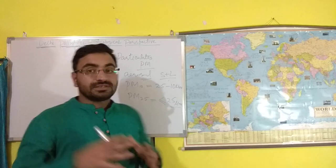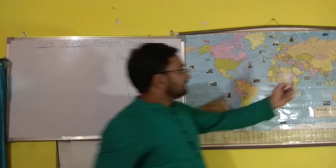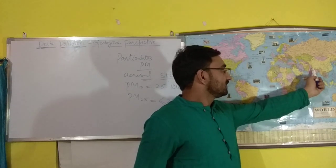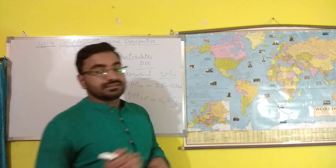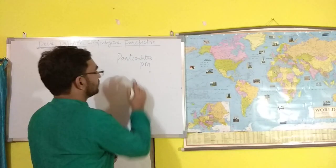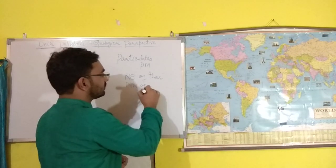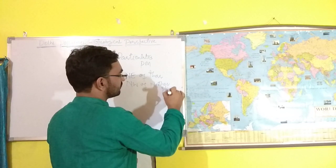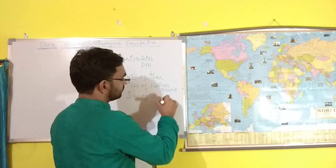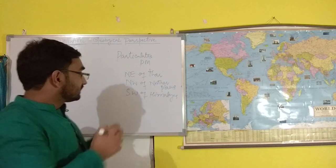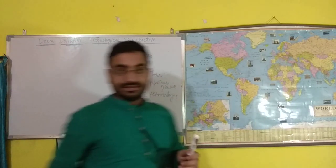Now I will discuss this from a geographical or geological perspective. If we see the geographical location of India and particularly the Delhi and adjoining area on the map, Delhi is in the north-east of the desert, it comes in the north-west of the northern plains, and it comes in the south-west of the Himalayas. So Delhi and the adjoining area has the Thar Desert, the northern plains, and the Himalayas to its north and north-east.